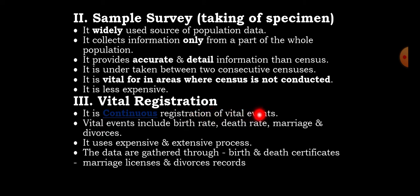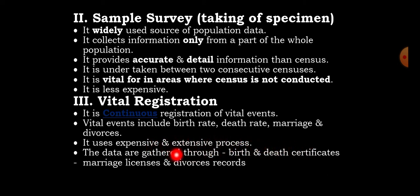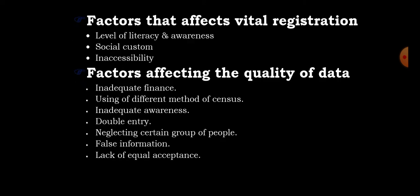The third type of population information is vital registration. It is the continuous registration of vital events. The vital events include birth rate, death rate, marriage, and divorce. It uses extensive processes. Vital registration is affected by level of literacy and awareness, social customs, and inaccessibility.